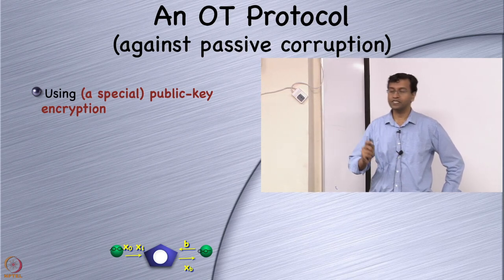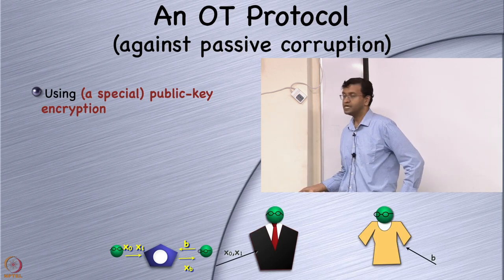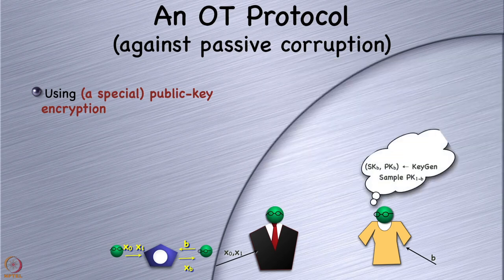There is a sender with two pieces of input x0, x1; the receiver has bit b; and after the protocol, she would like to retrieve x_b. To begin, she runs the key generation algorithm for this public key encryption scheme, giving her a secret key and public key pair — called SK_b and PK_b. She also needs to have another public key, PK_{1-b}, which she does not generate using key generation — instead she samples it directly.